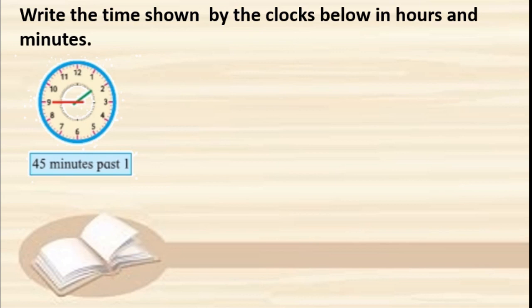Write the time shown by the clocks below in hours and minutes. Here a green hand shows the hour and the red colored hand tells us about the minute. What is the time? 45 minutes past one — because the hour hand is near to two, so it is 45 minutes past one. Counting: 5, 10, 15, 20, 25, 30, 35, 40, 45 — yes, this is 45.